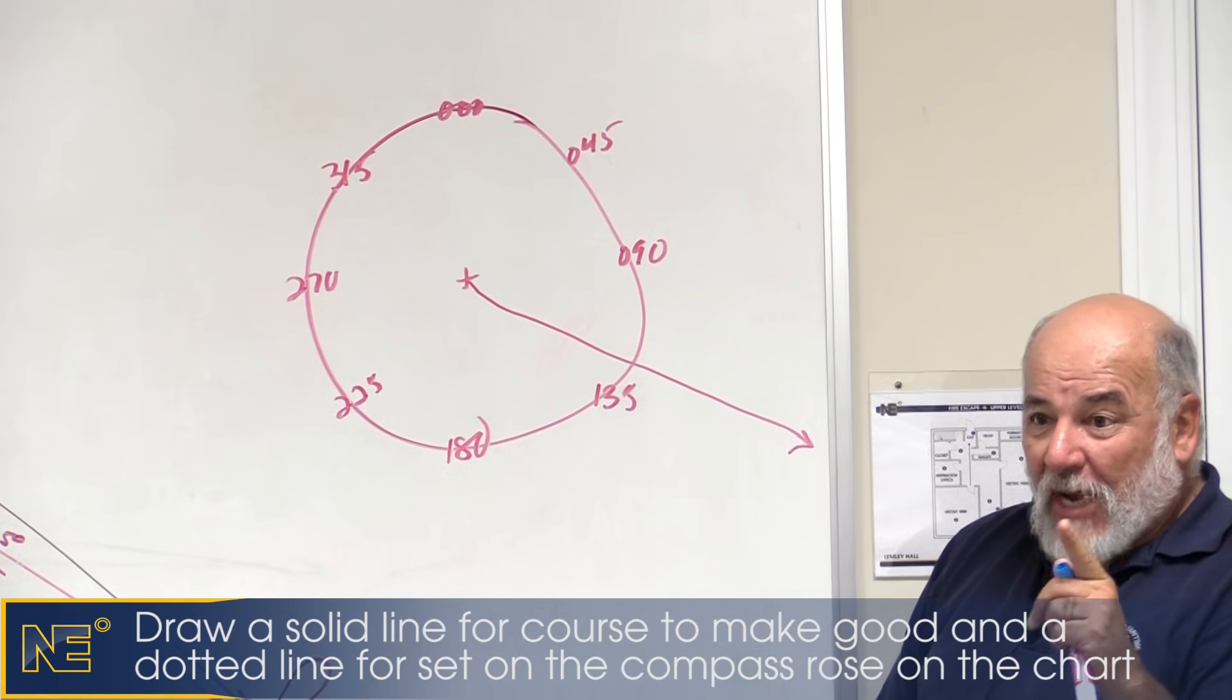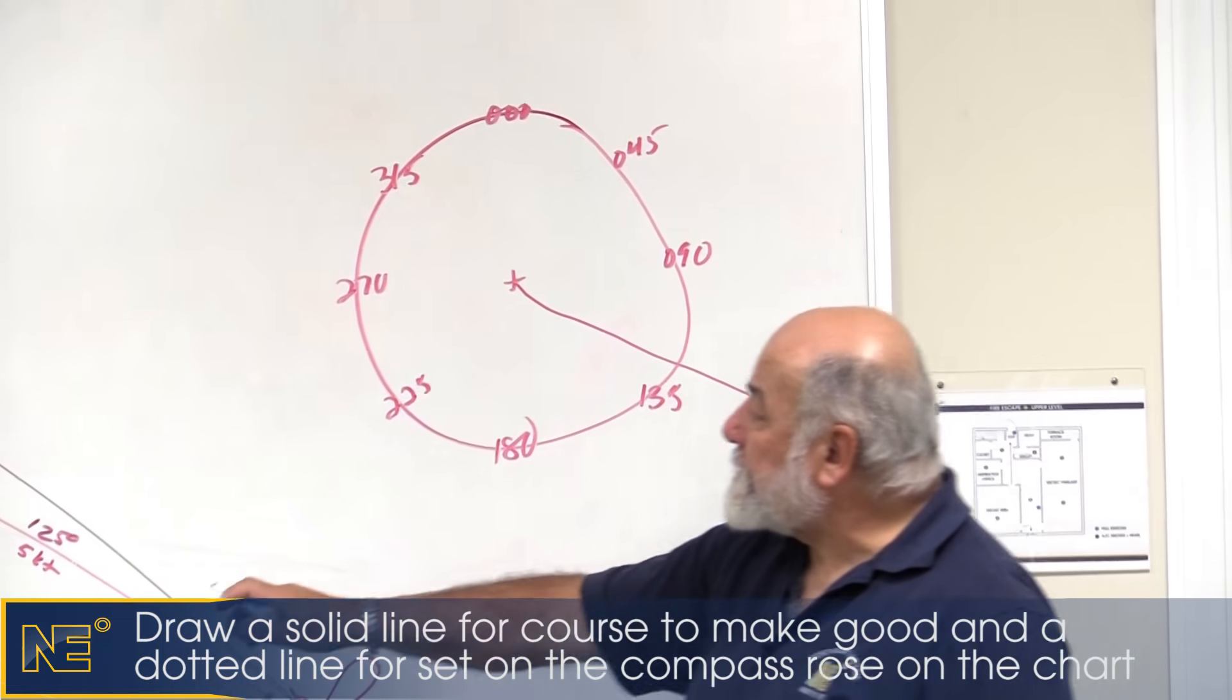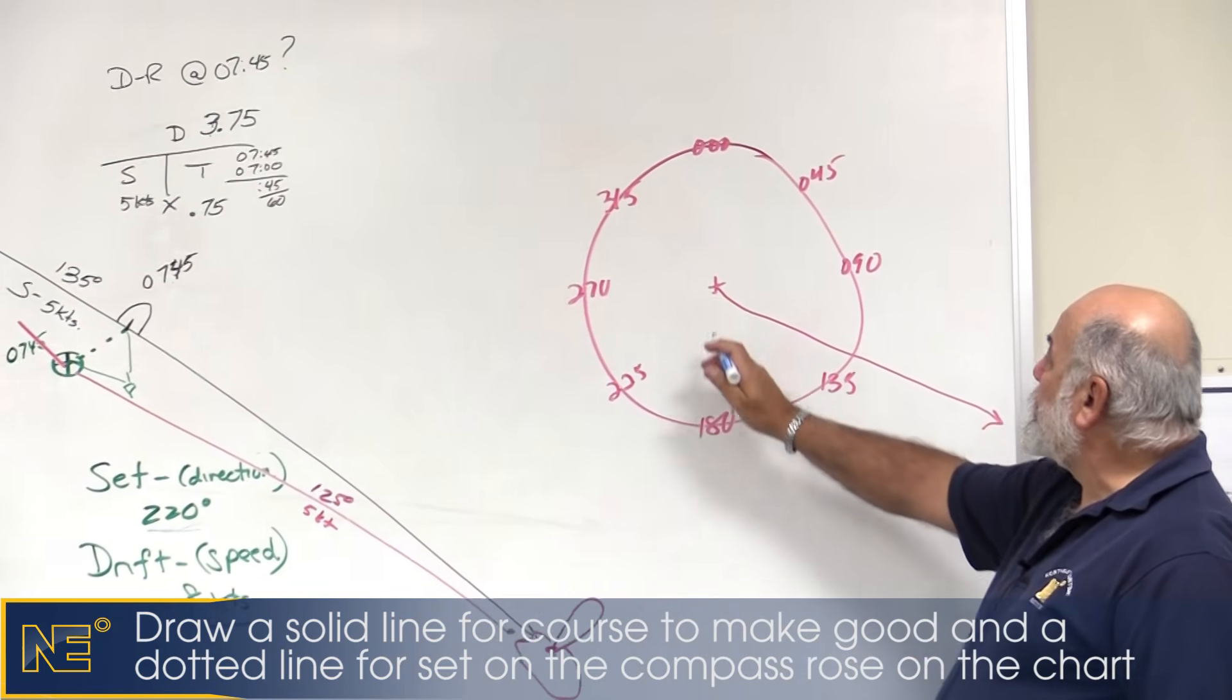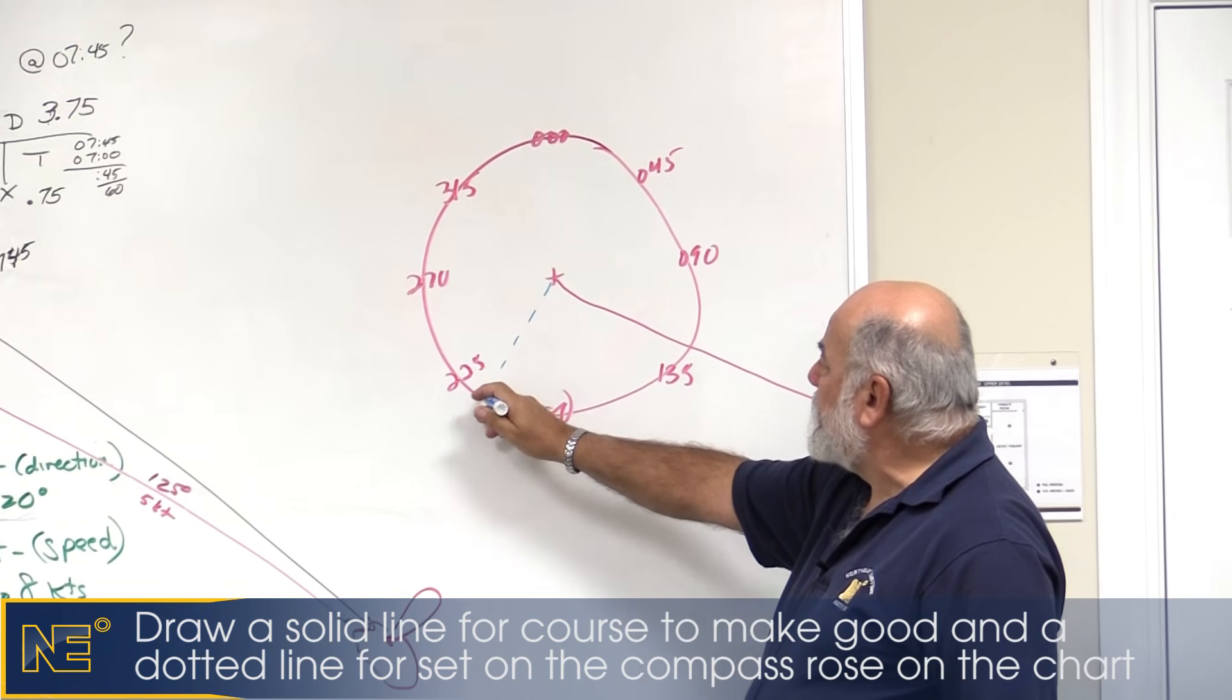Set is the next thing I draw. Set is always drawn with a dotted line. What's the set, the direction the current is flowing? 220. So I draw from the compass rose, 220 degrees dotted line.